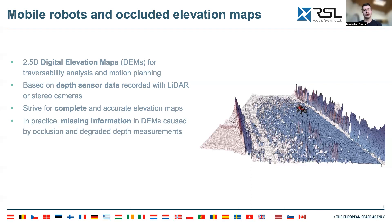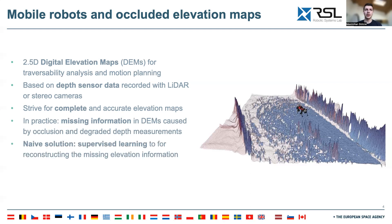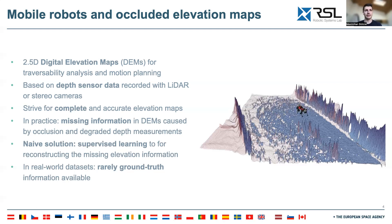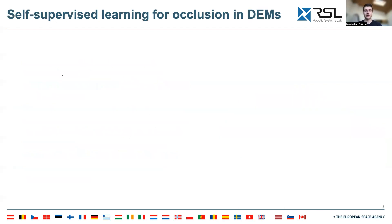One solution to this would be to use supervised learning to train a neural network to reconstruct the missing elevation information. However, in real-world datasets there is rarely ground truth information available, which is required for supervised learning.